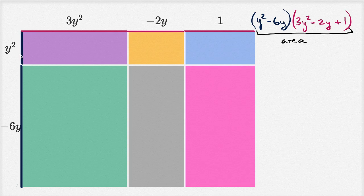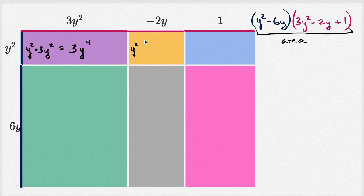Let's look at the first one. The area of this purple rectangle is going to be the height, y squared, times the width, 3y squared, which is going to equal 3y to the fourth power. The area of this yellow rectangle: height is y squared times the width, negative 2y, which gives us negative 2y to the third power. And the blue one: height times width is y squared times one, which is just y squared.